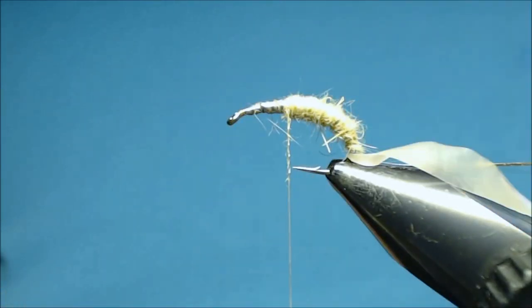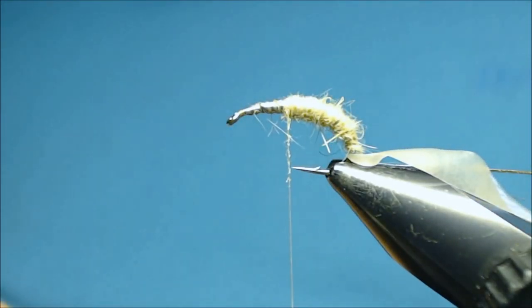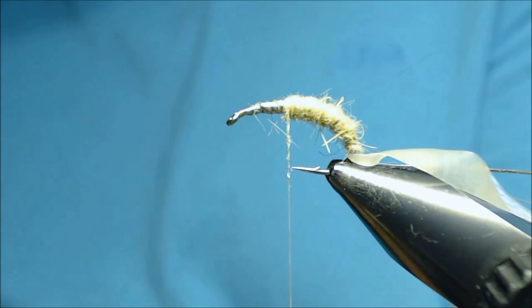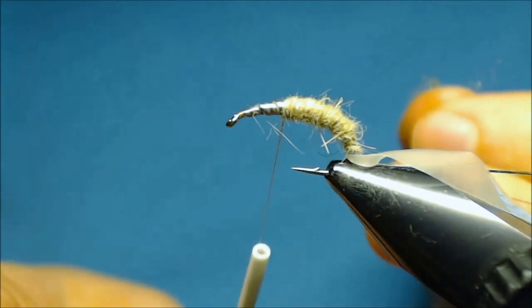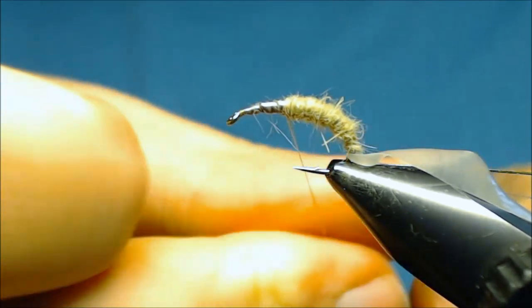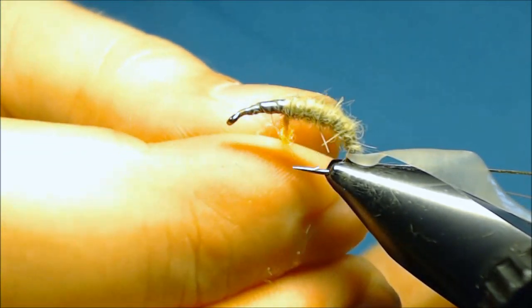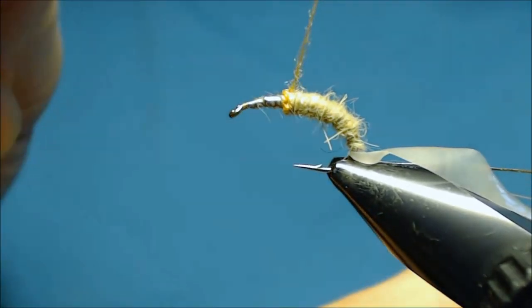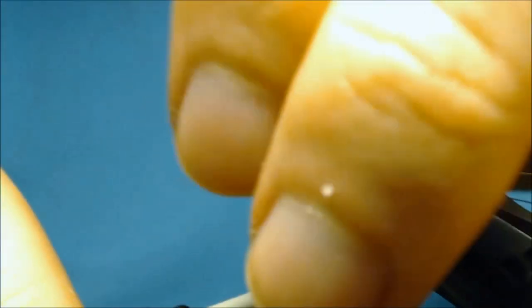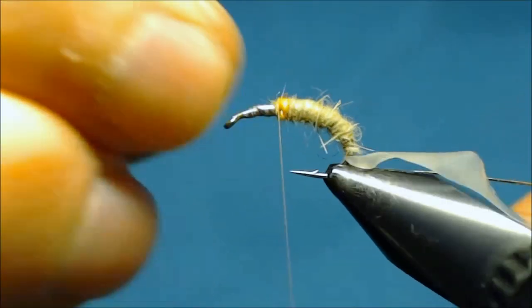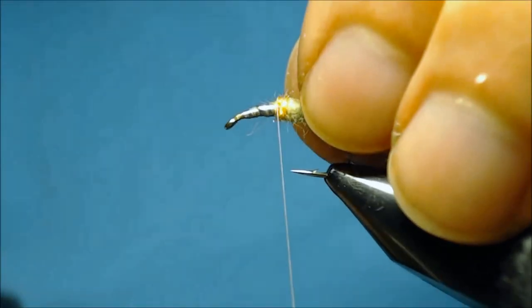Now we can tie in a hot spot. But this isn't needed, but I like to do it. So for this one I'll use some bright orange, also from the SLF Masterclass. And you just want a tiny tiny bit of this. And just one turn to one turn and a half, just to add this little hot spot in the middle.